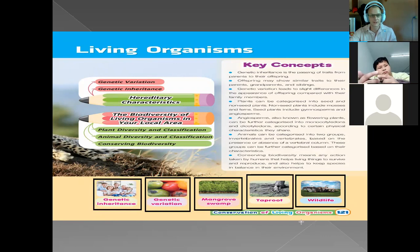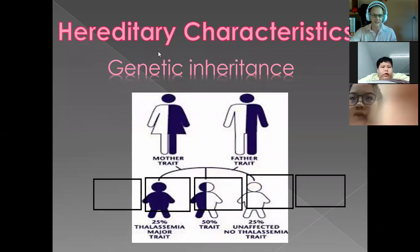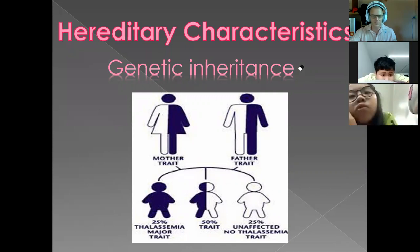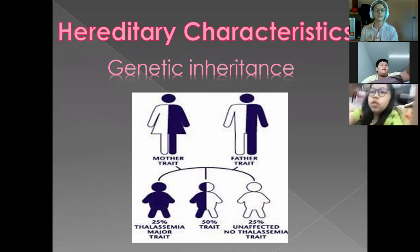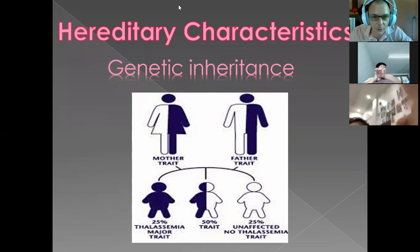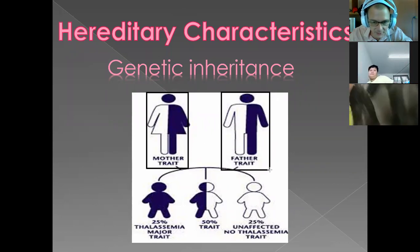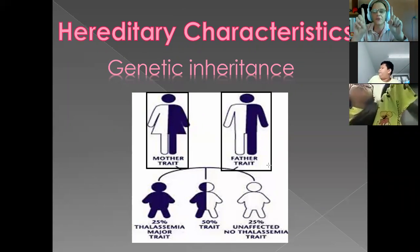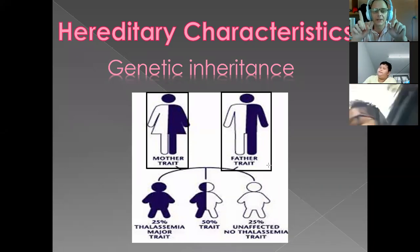Today we're going to focus a little bit more on our genetic inheritance, or our hereditary characteristics — some very big science words. Let's look at the picture at the bottom. We have two parents here: the mother and the father. These are two different people with two different sets of DNA.